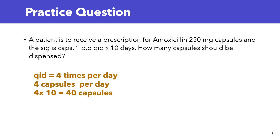The prescription is written for 10 days. So if you're taking four capsules per day, how many capsules are you going to take in 10 days? That's four times 10, so your total is 40 capsules must be dispensed for the 10-day supply.